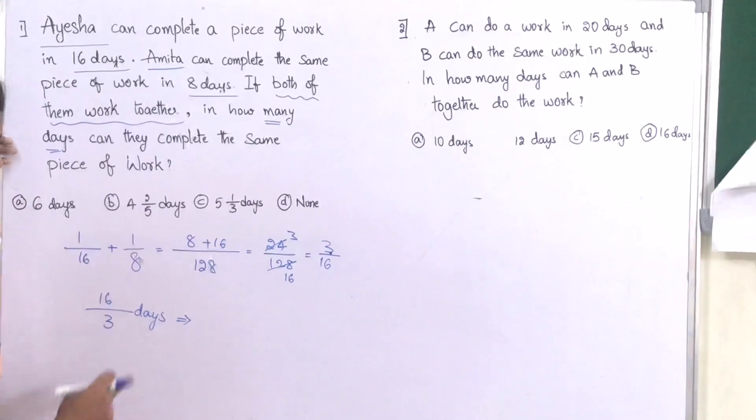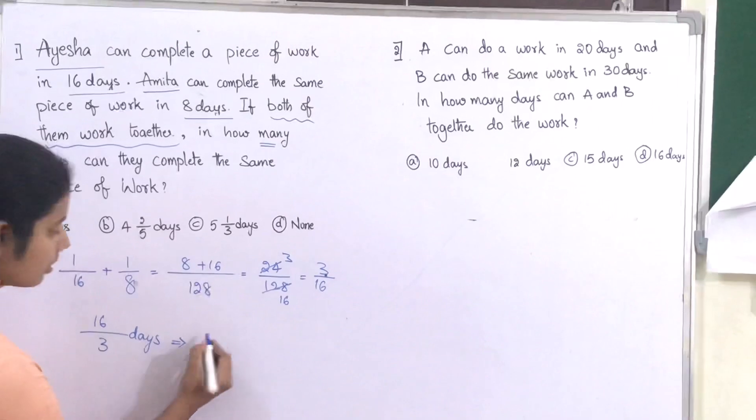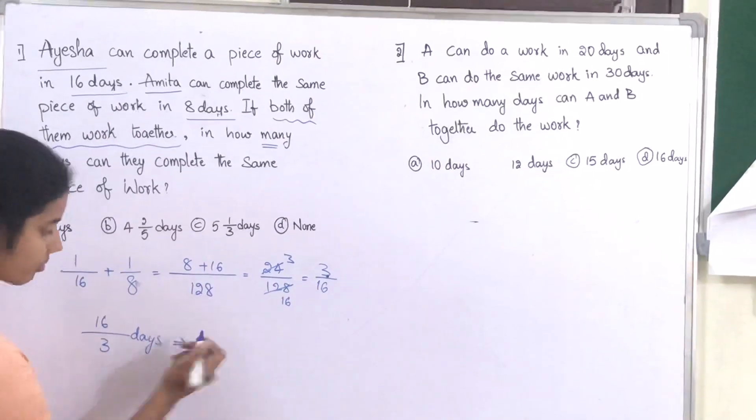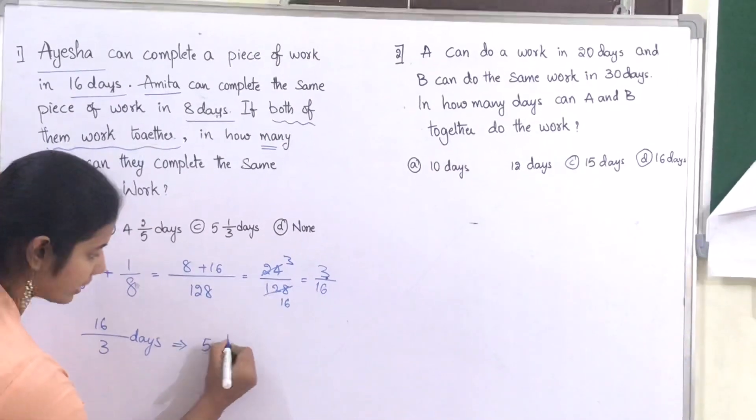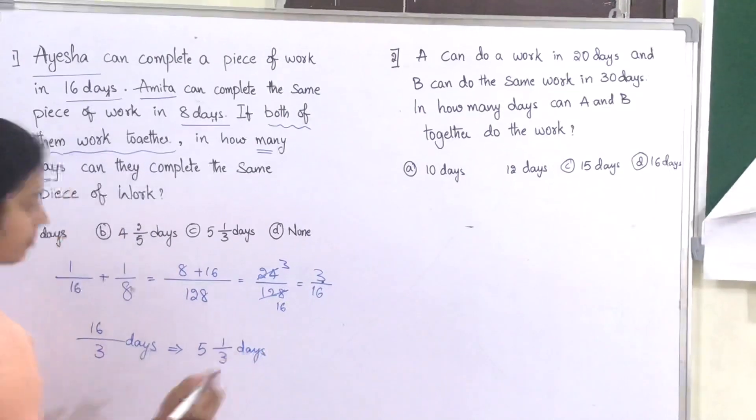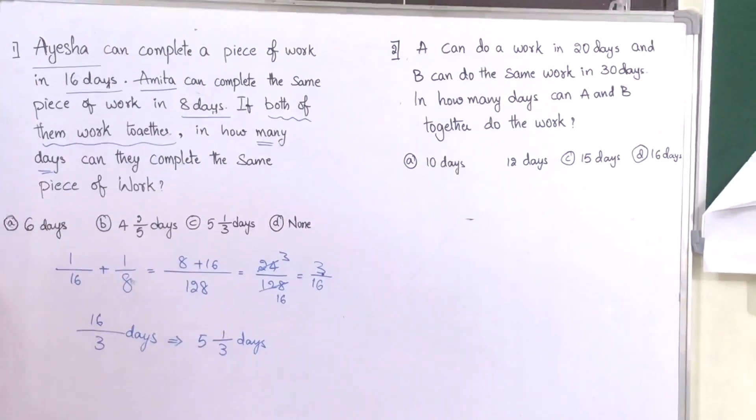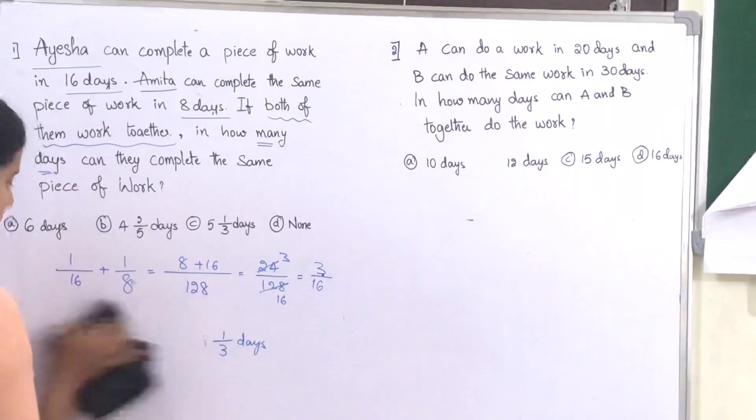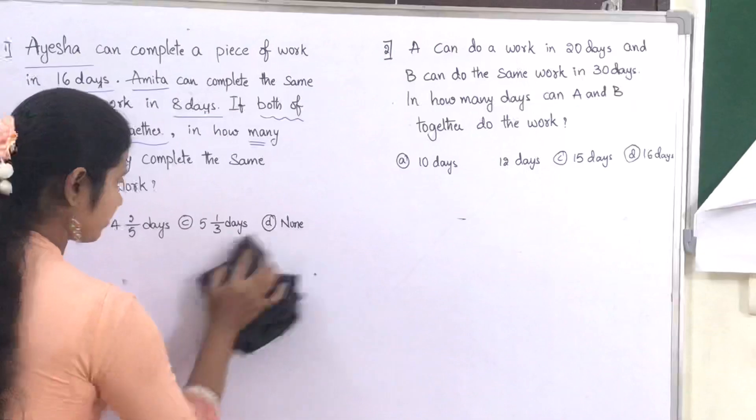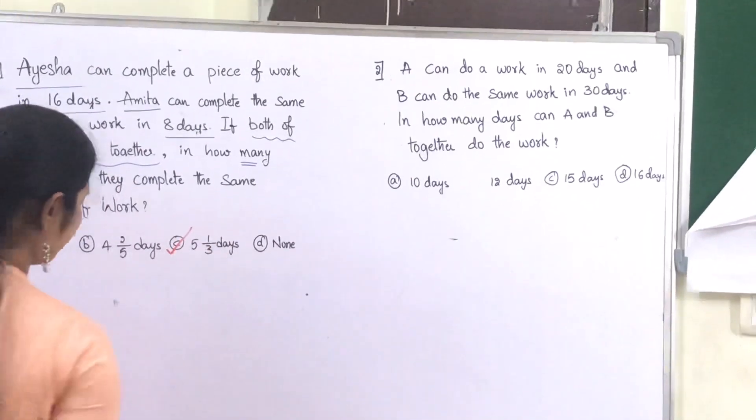As we don't have 16 by 3 in the options, we have to convert the fraction into a mixed fraction. That is 5 and 1 by 3 days. Now let us see another method to simplify such problems. So the option is 5 and 1 by 3.